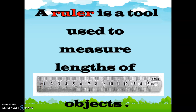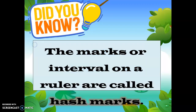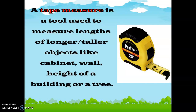Another tool we can use to measure length is called a ruler. It is used to measure the lengths of objects. Did you know that the marks or intervals on a ruler are called hash marks? So the lines that we see on a ruler are called hash marks, which are used to measure length. Another tool is a tape measure — it is used to measure the length of longer or taller objects like a cabinet, wall, height of a building, or a tree.